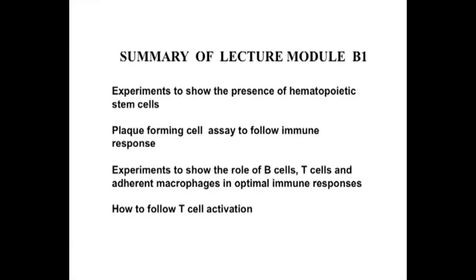We went through some of the experiments that showed the presence of hematopoietic stem cells, where we looked at how mice could be irradiated and populated with stem cells isolated from the bone marrow. Then we looked at how immune responses were followed in early experiments using plaque forming cell assays to quantitate the B cells that were producing antibodies. Then we went into some experiments to show the role of B cells, T cells, and the adherent macrophages.